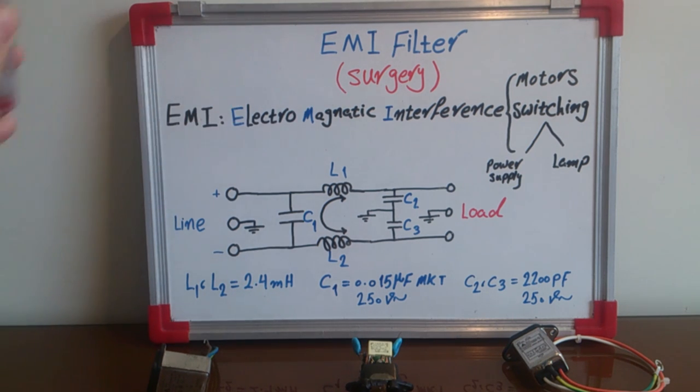EMI means electromagnetic interference and it's produced mostly when motors are working and switching devices or circuits are working, like power supply switching or some kinds of lamps like LED lamps that have switching circuits for providing power supply.